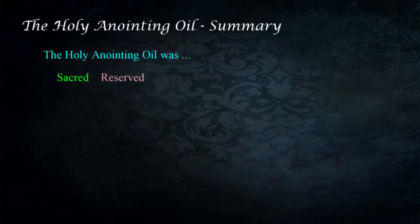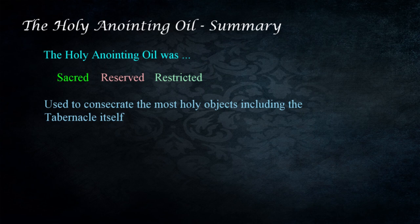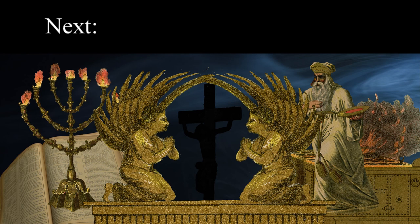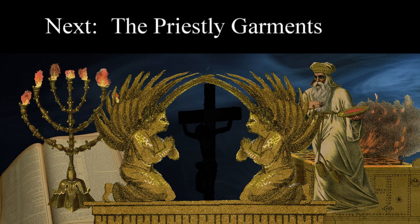The holy anointing oil was sacred, reserved, and restricted. It was used to consecrate the most holy objects in the tabernacle, including the structure itself. The anointing of these things forms a figurative link with Christ, who is the sum of all these things, to bring us to the Lord and gives us hope for eternal life with him. From the beginning of time God has clothed his children — under the law, those who served as priests and ministers in the tabernacle would have to be clothed in a way authorized by the Lord. In the next lesson we'll examine the priestly garments and explore their connection with Christ and believers today.